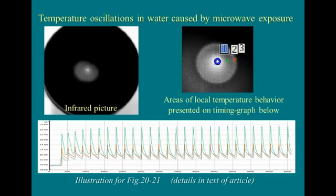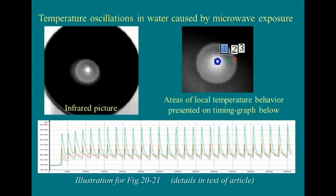The general conclusion that can be made from our experiments described in the article is as follows: water remains permanently in thermal-convectional mixing. Therefore, the hypothesis declaring the presence of any stable molecular matrix with information about previous influences on water has very low chances to be true.